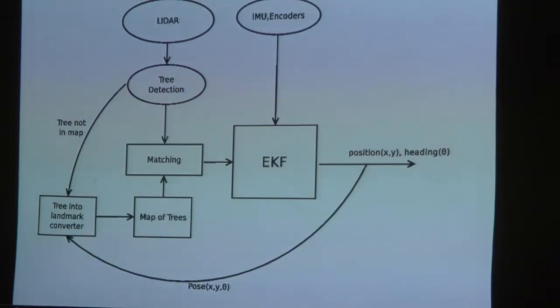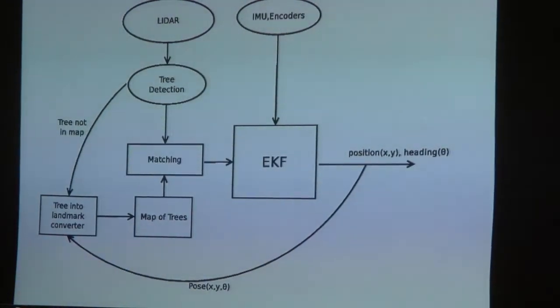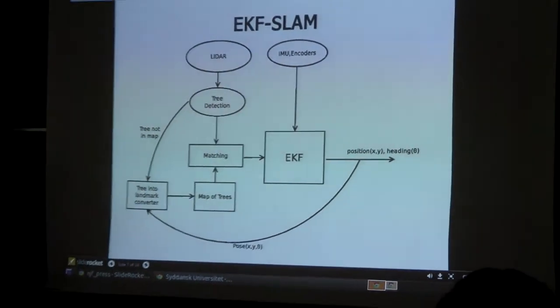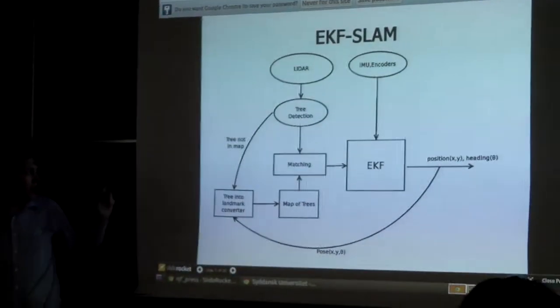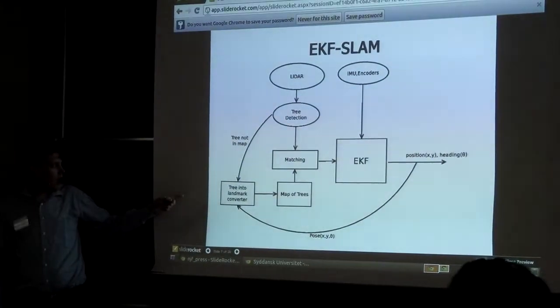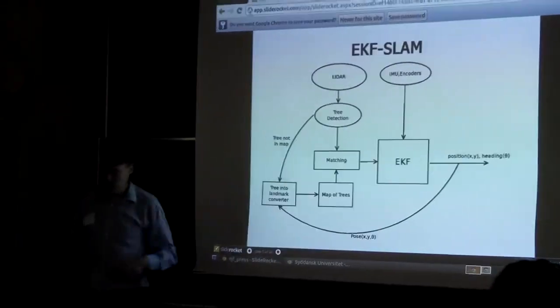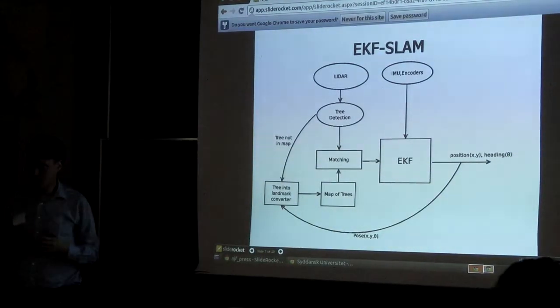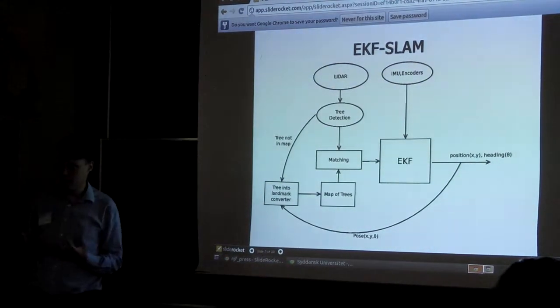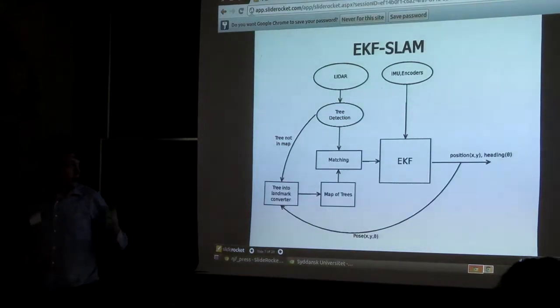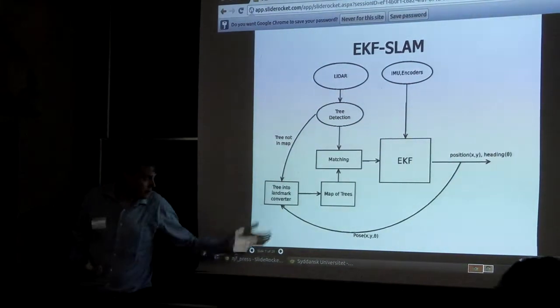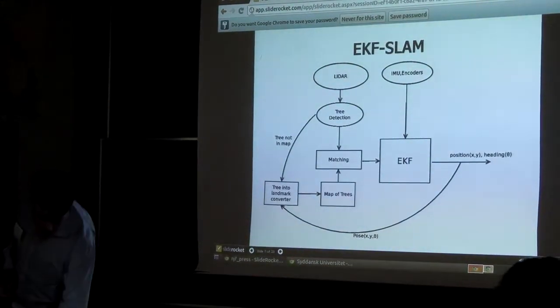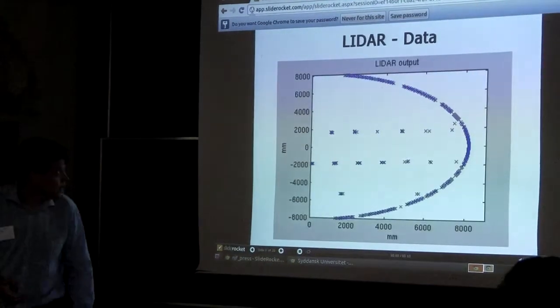To make the localization, I used Extended Kalman Filtering, basically SLAM in this case, where I detect the trees and make a match to a map I had created. When I started, I had no trees in this map, so I started without knowing anything. I had no information about my surroundings, and for each time I detect a new tree I added it to the map, combined with the new position I have.